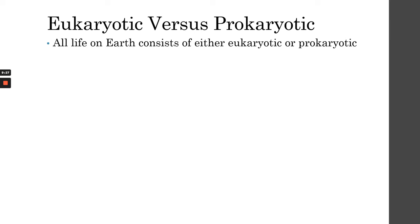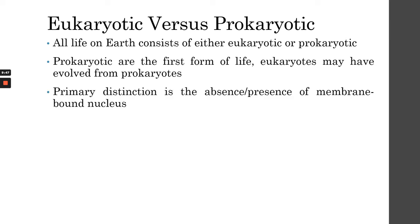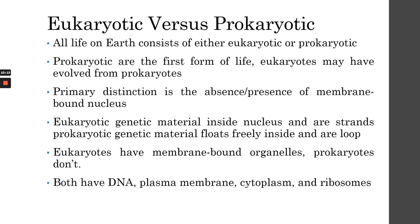All life on Earth consists of either eukaryotic or prokaryotic cells. It is believed that prokaryotes were the first form of life and that eukaryotes evolved from prokaryotes about 3 to 5 billion years ago. The primary distinction is the absence or presence of a membrane-bound nucleus — prokaryotes don't have one, eukaryotes do. Eukaryotic genetic material is in chromosomes inside the nucleus, while prokaryotic genetic material floats freely in a loop form. Both have DNA, plasma membrane, cytoplasm, and ribosomes.